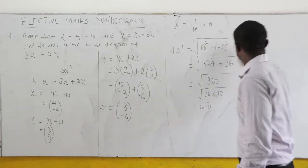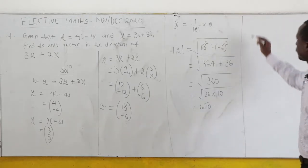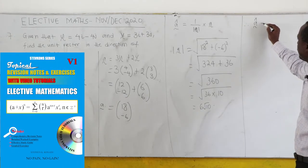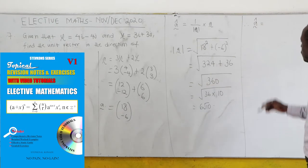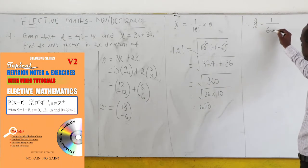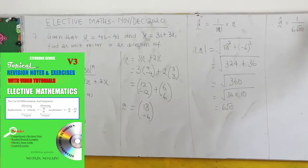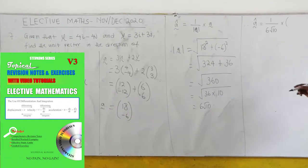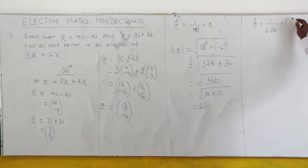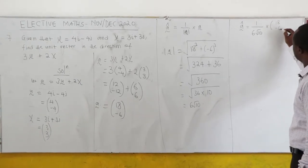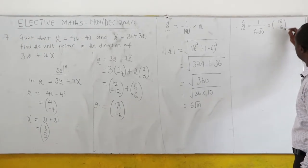Therefore, the unit vector of a is 1 over the magnitude, which is 6 root 10, times the vector a. The vector a is the same as (18, -6).